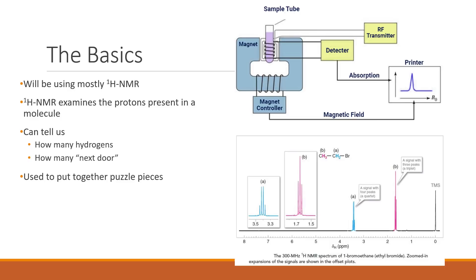Once we get a spectrum it's going to tell us two things: how many hydrogens there are at a specific location, and how many hydrogens are next door to that specific location. We're going to be talking about integration, peak position, and splitting. These are all puzzle pieces we need to use to put together our analysis of the molecule.